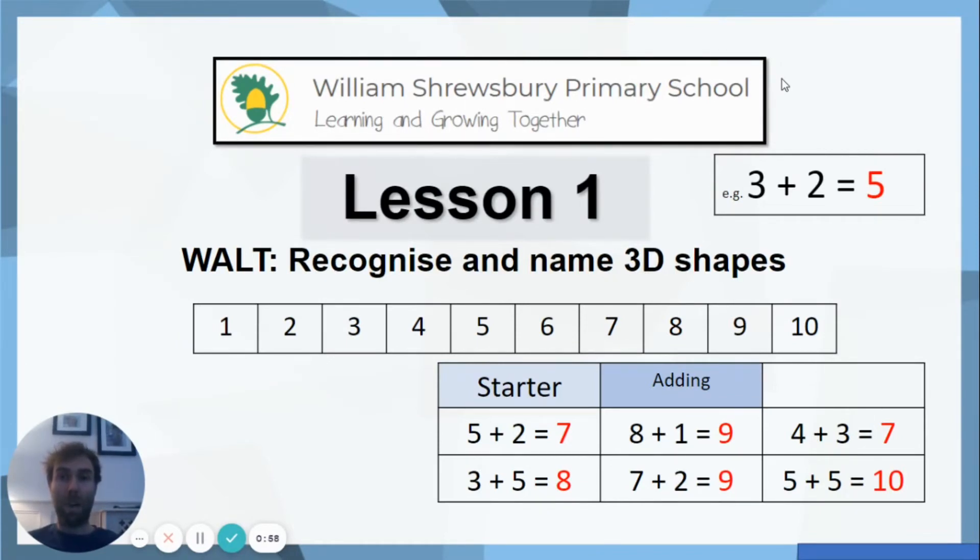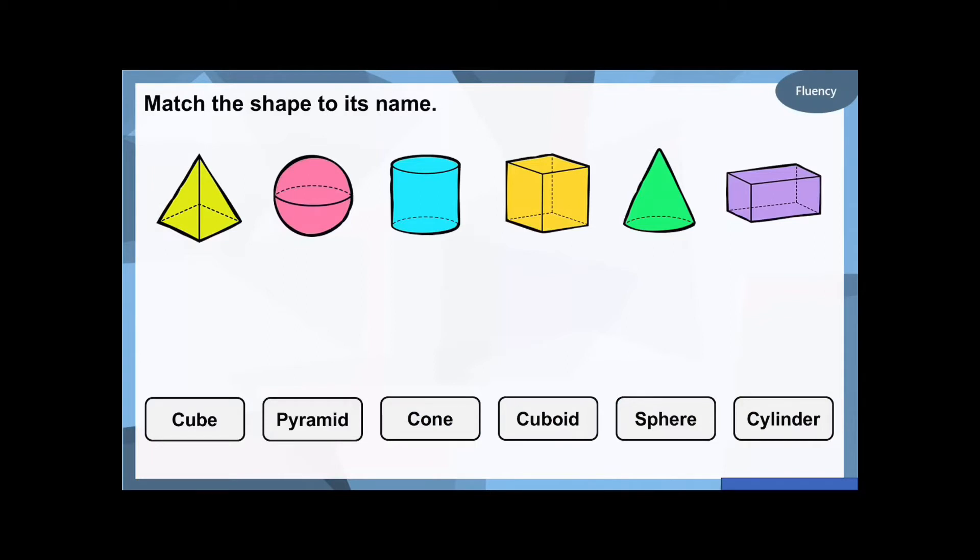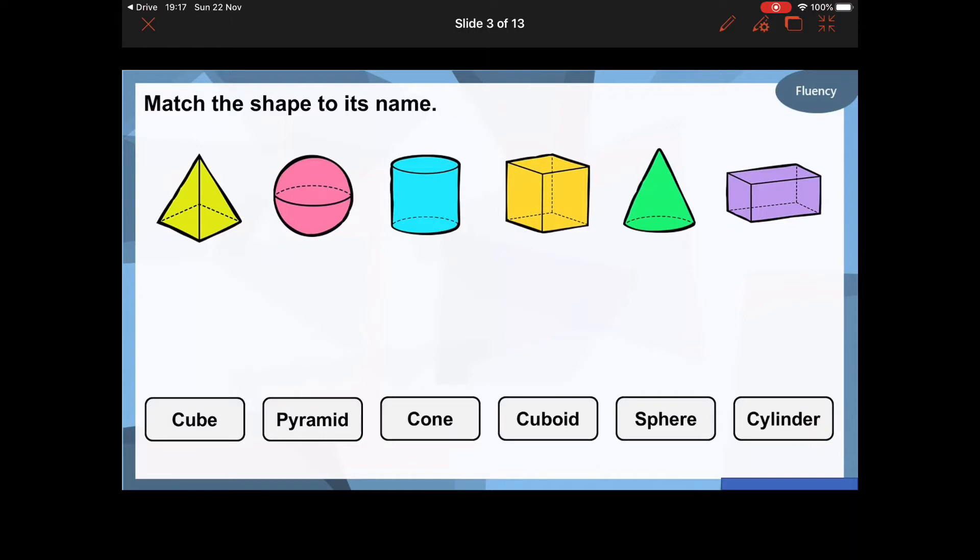Right, so we're going to be on to our lesson now. We're recognising and naming 3D shapes. We've got the shapes across the top here and I want you to match the shapes to the shape name. I'm just going to read the shape names out across the bottom: cube, pyramid, cone, cuboid, sphere and cylinder. I want you to pause the video and see if you can match the name of the shape to the actual shape. Don't leave any blanks, just have a good go.